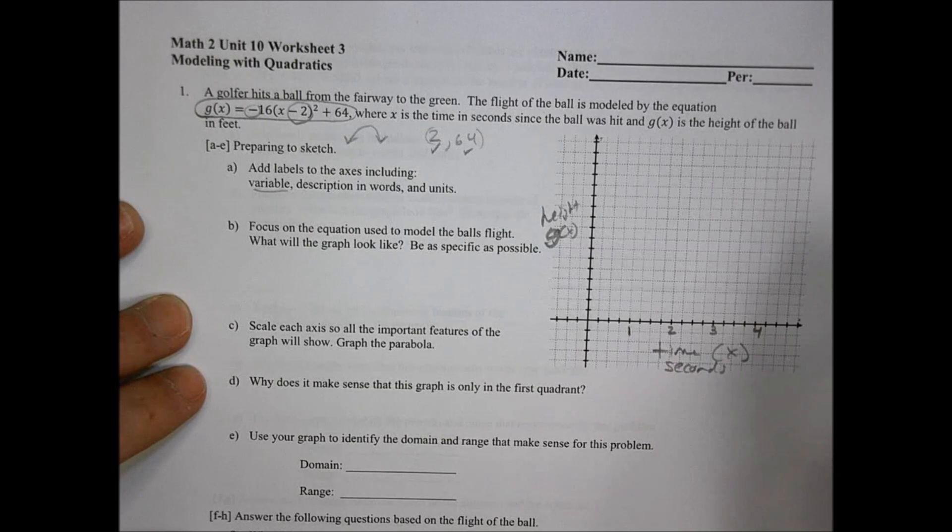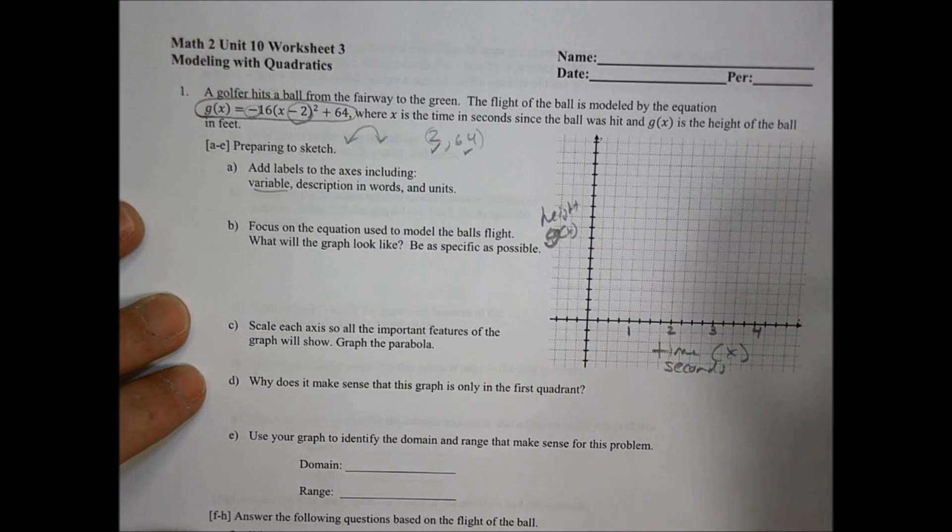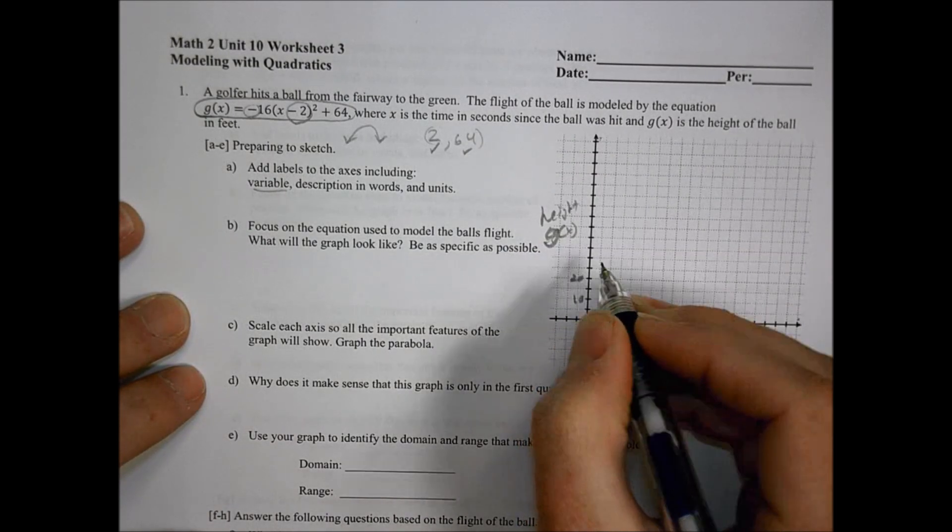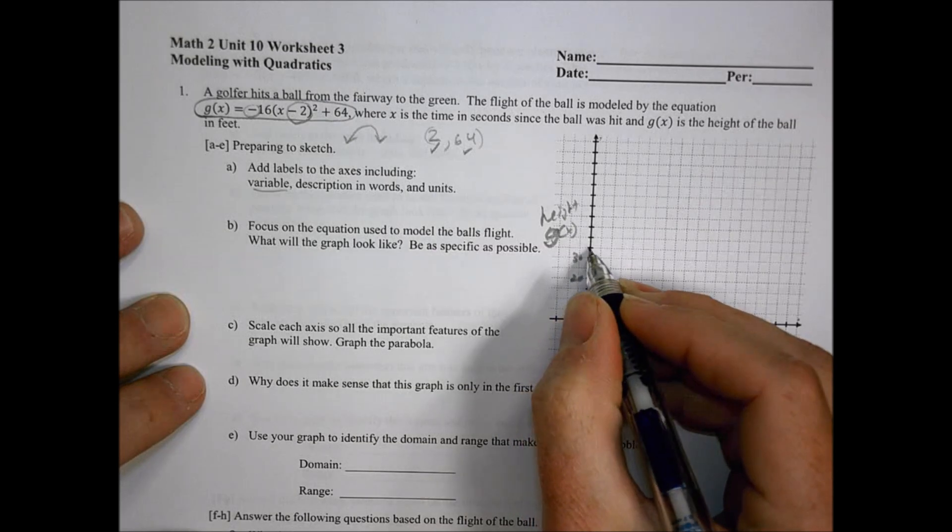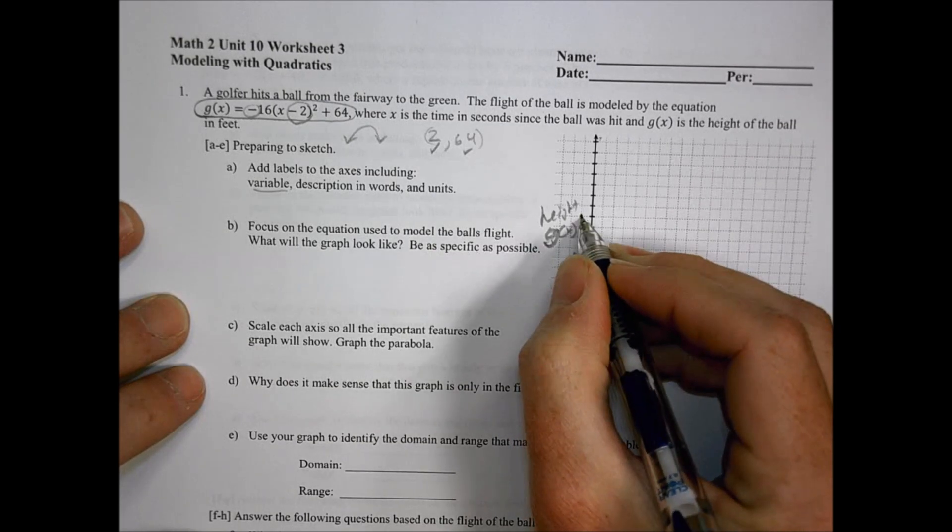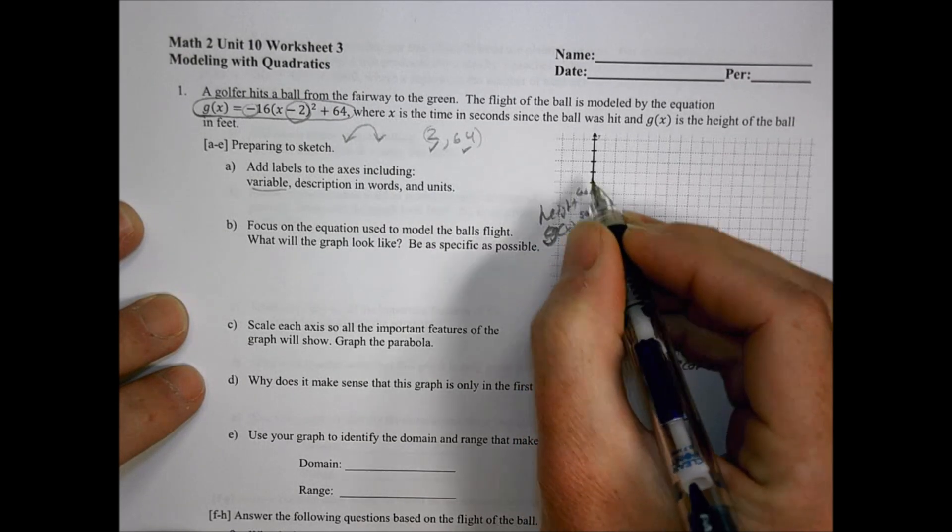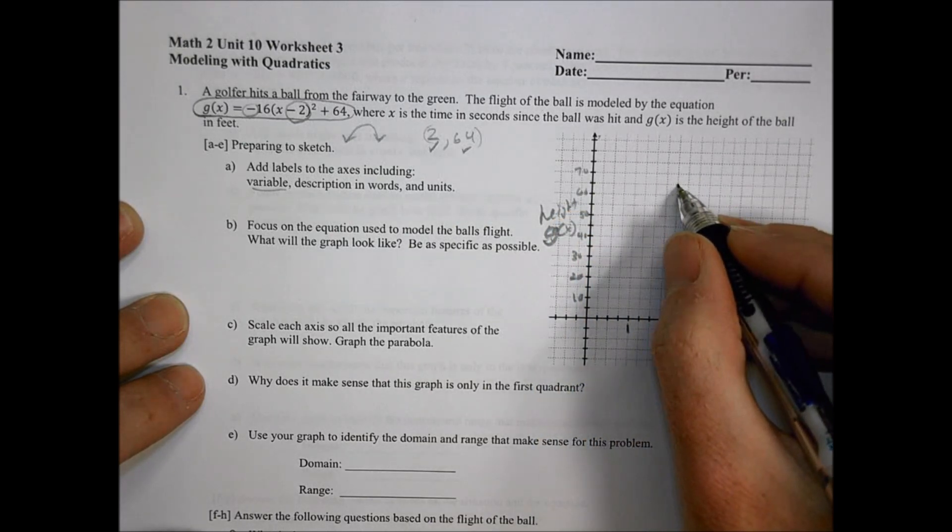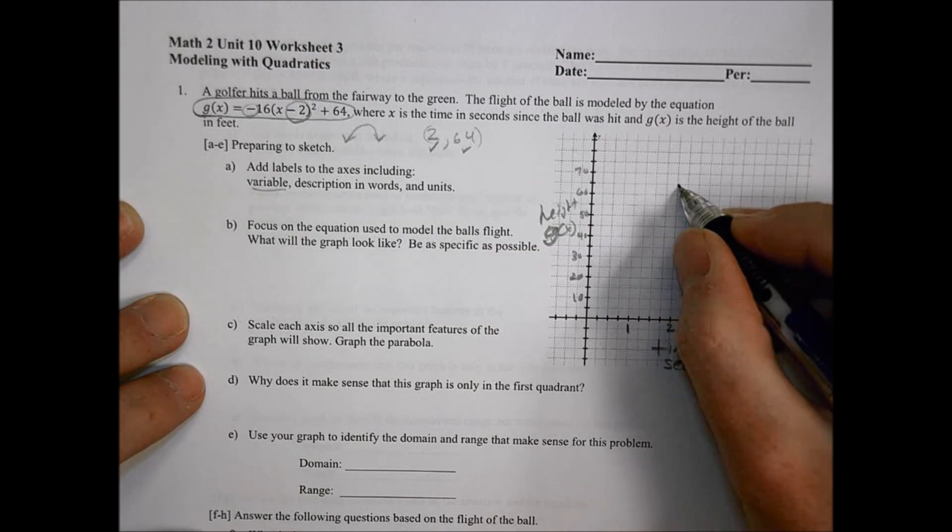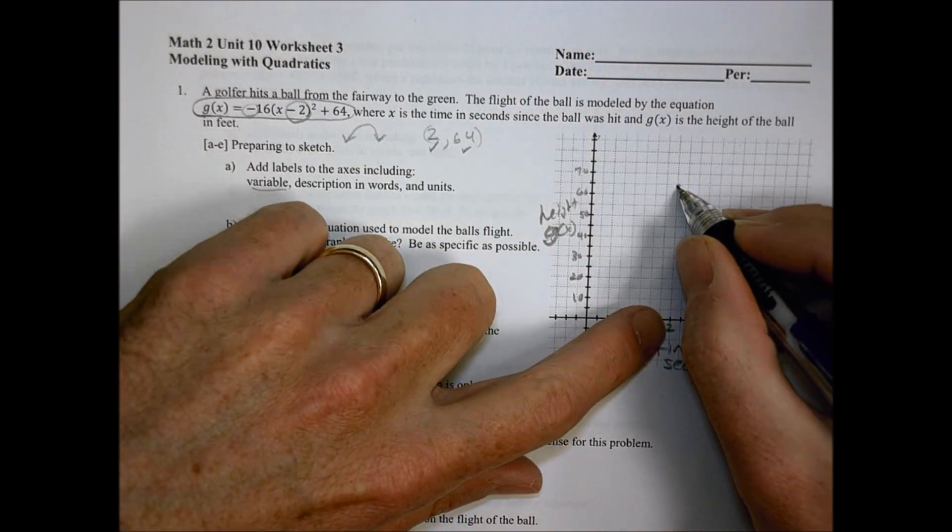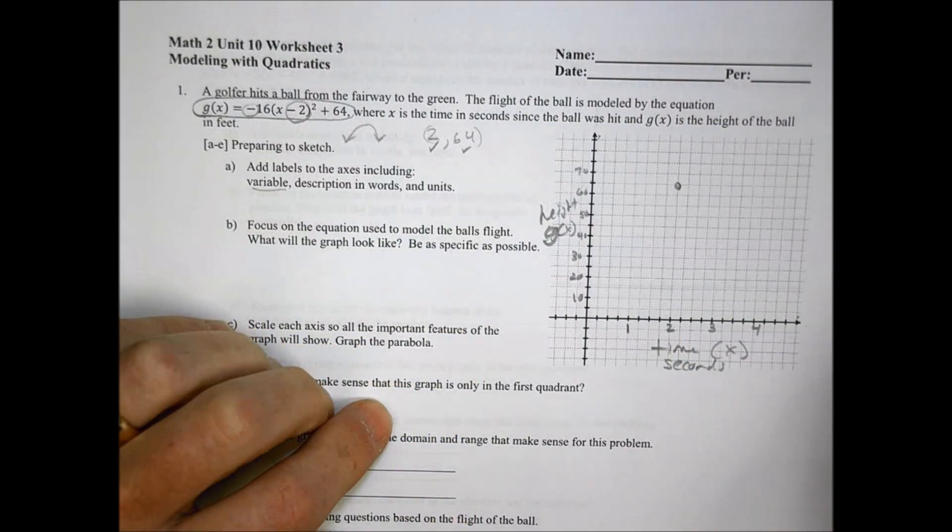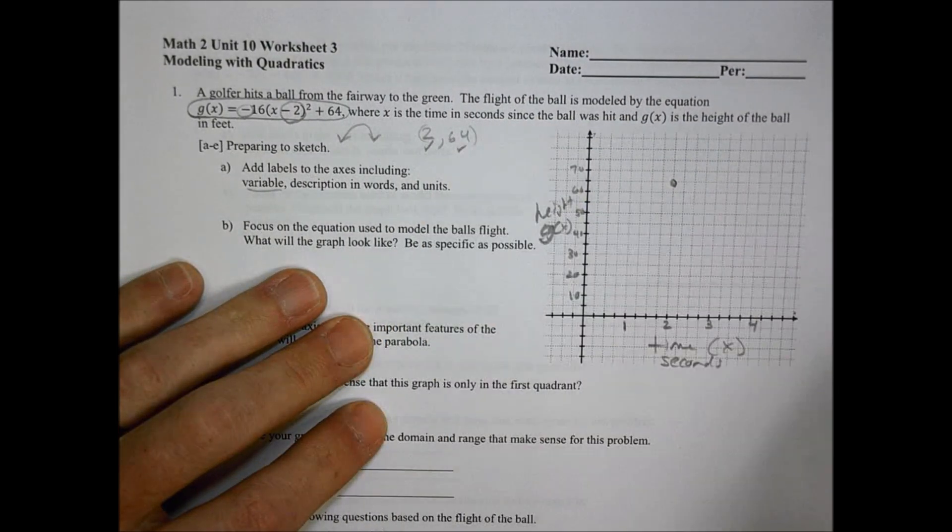For the height, I know I have to get up to 64, so I can maybe count by fives. So I have 5, 10, 15, 20, 25, 30, 35, 40, 45, 50, 55, 60, and then 65, 70.